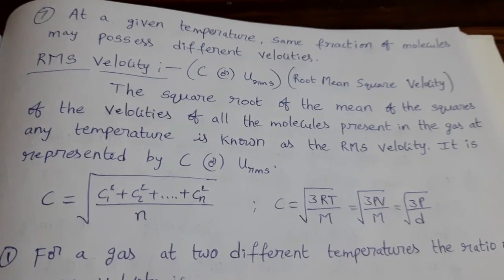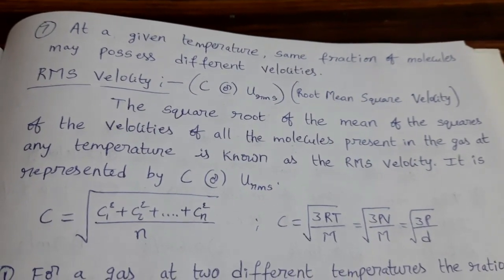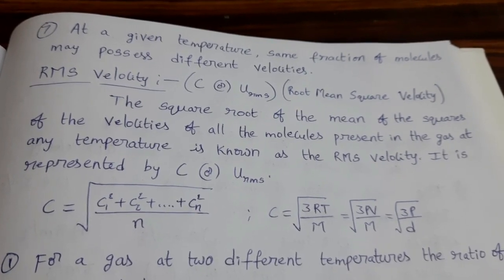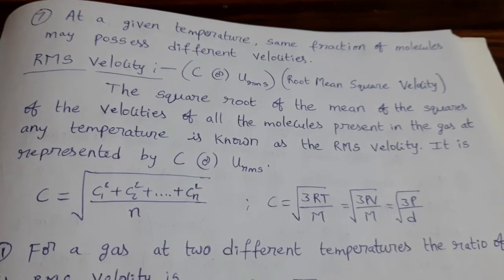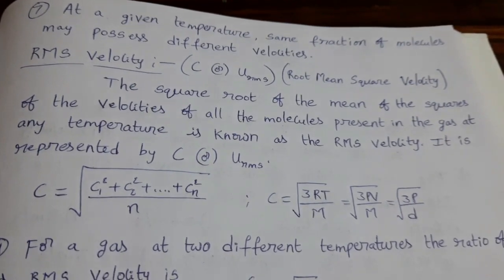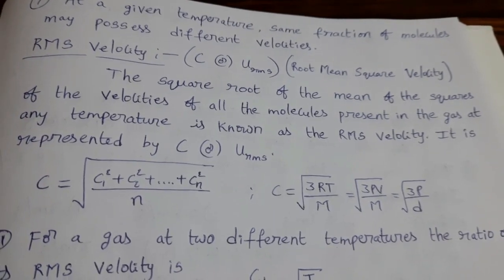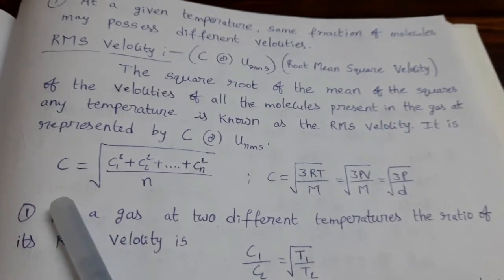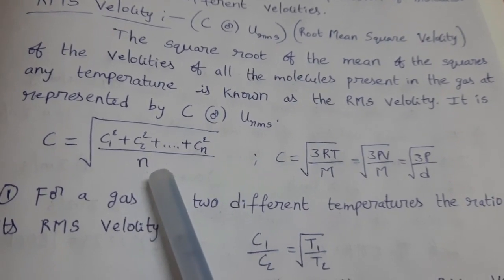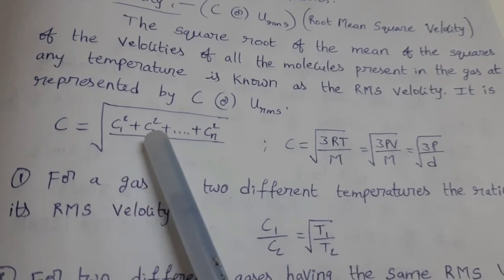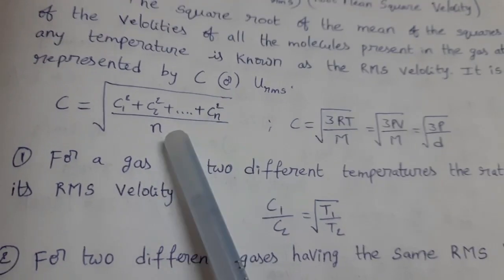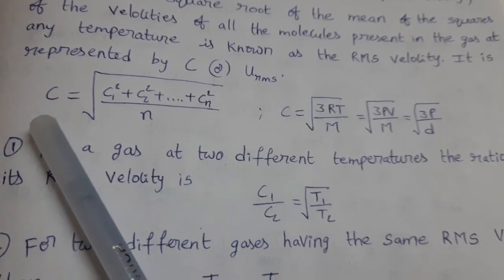Now see the RMS velocity. RMS velocity means root mean square velocity. It is represented by the symbol C or U_RMS. The square root of the mean of the squares of the velocities of all the molecules present in the gas at any temperature is known as RMS velocity. So RMS velocity C = √(C₁² + C₂² + ... + Cₙ²)/n.